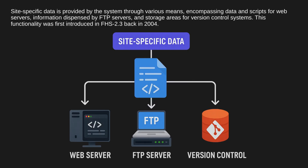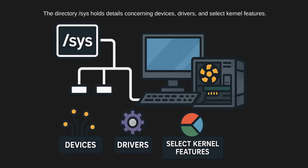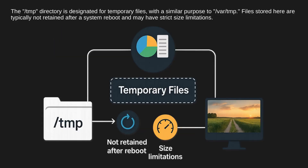This functionality was first introduced in FHS 2.3 back in 2004. The directory /sys holds details concerning devices, drivers, and select kernel features. The /tmp directory is designated for temporary files, with a similar purpose to /var/tmp. Files stored here are typically not retained after a system reboot and may have strict size limitations.